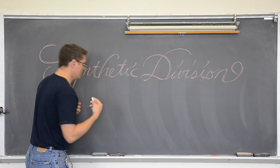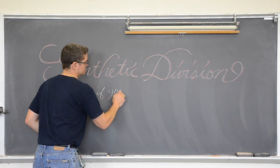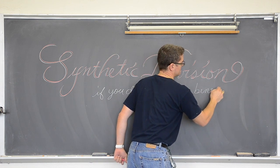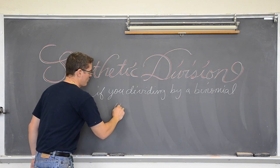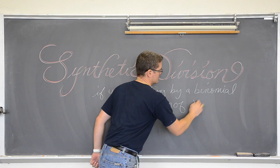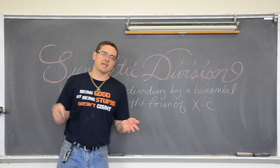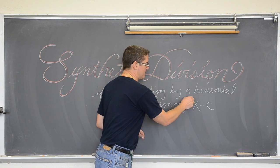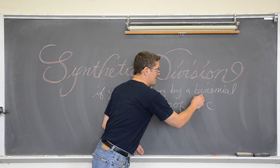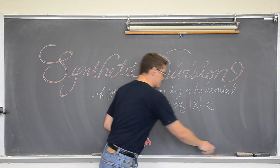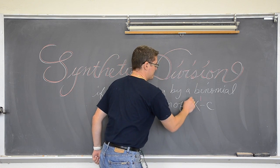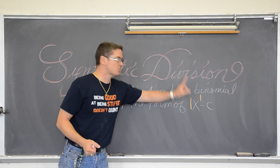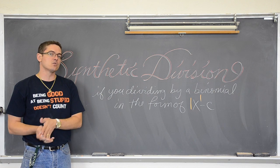Synthetic division is doable if you are dividing by a binomial in the form of x minus c. So we are about to do an example. Synthetic division, as long as you are dividing by something with a leading coefficient of one and the binomial has a degree of one, you can do your synthetic division to shortcut the problem and not have to go through all the steps of long division. But synthetic division only works if your leading coefficient is one and the degree of that binomial is one. Otherwise you are stuck doing long division.